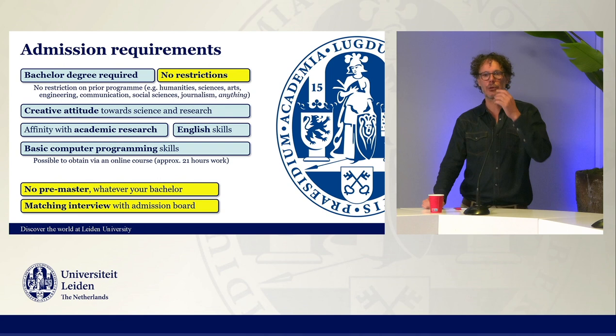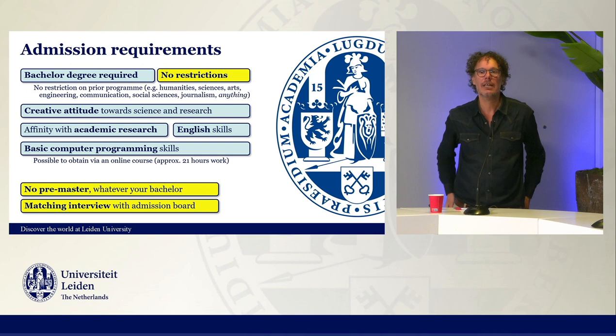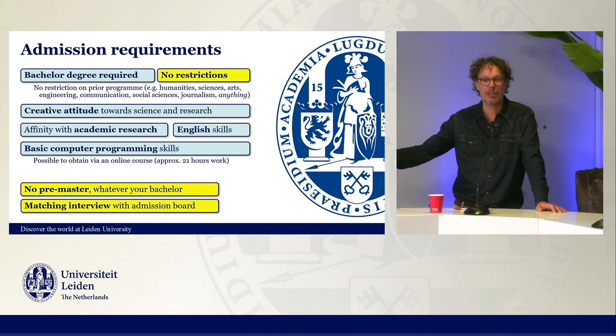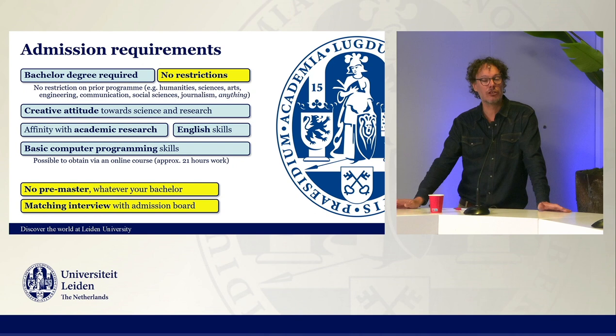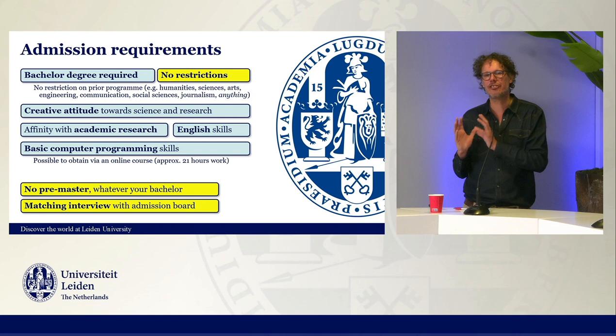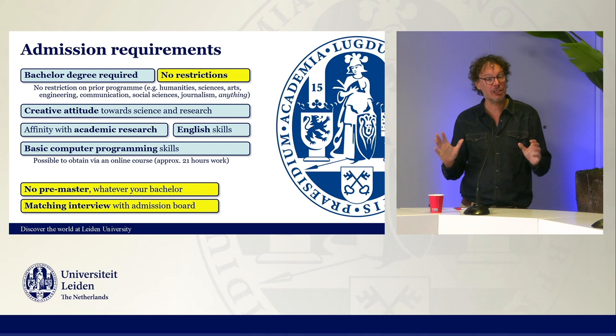If we look at the admission requirements: you can only enter the program if you have a completed bachelor degree. You can already apply before you have completed your bachelor, but you must have a bachelor degree once you enter the program. We do not have any restrictions on which bachelor degree — what topic it is. It can be from the humanities, from the sciences, from the social sciences, anything really. Students really need to have this personal interest and need to be able to substantiate it. They need also a creative attitude, they have to do an English test, and they need to be able to do some computer programming — not much, but some.